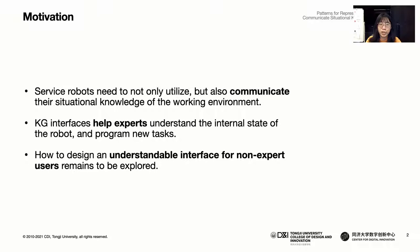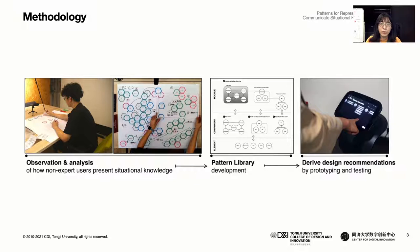To this end, we aim to discover patterns that naturally arise when ordinary people try to visually communicate the knowledge of a robot using cards on a canvas. We describe the process of discovering and formalizing these patterns, then derive design recommendations by prototyping and Wizard of Oz testing.